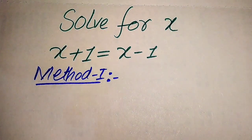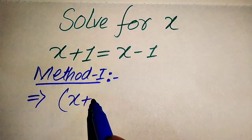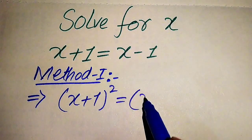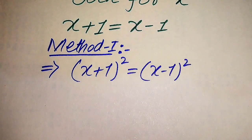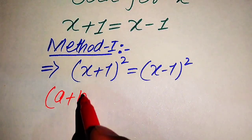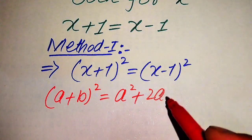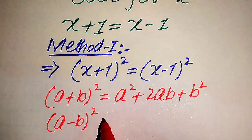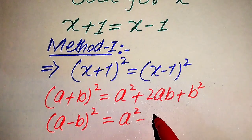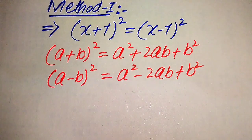In the first method we need to apply squaring on both sides. When we square both sides it is written as (x+1)² = (x−1)². We apply algebraic formulas on both sides: (a+b)² = a² + 2ab + b² on the left-hand side, and (a−b)² = a² − 2ab + b² on the right-hand side. We need these two formulas to solve the equation.